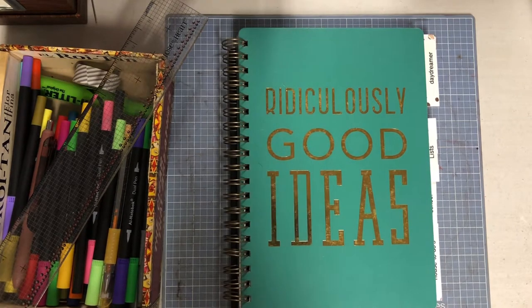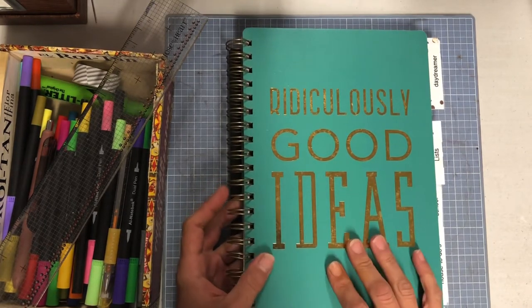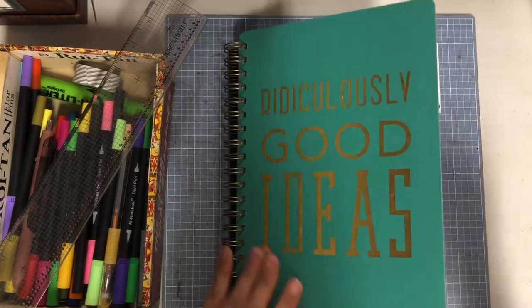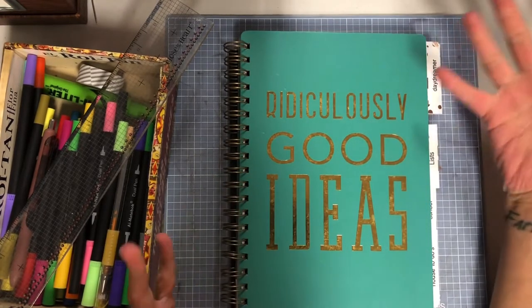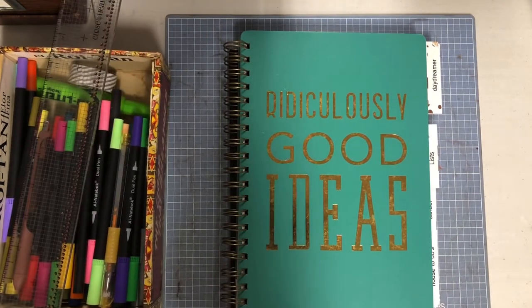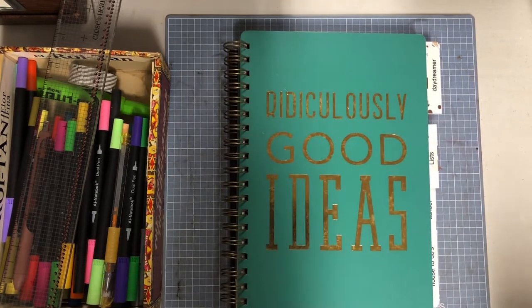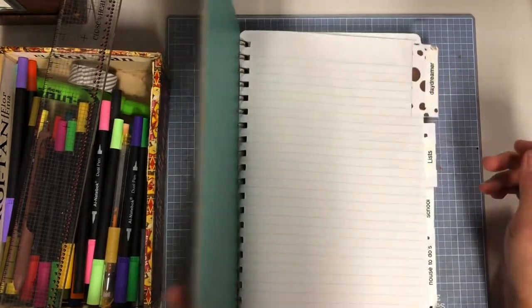I just want to show you some of the things that I enjoy doing with mine. This book is not a journal that I've covered, I found it at Dollarama for four bucks. It's got a nice sturdy cover. I bought it because I just loved the saying on there, ridiculously good ideas. So far I've been lucky. This book I use for all kinds of things.